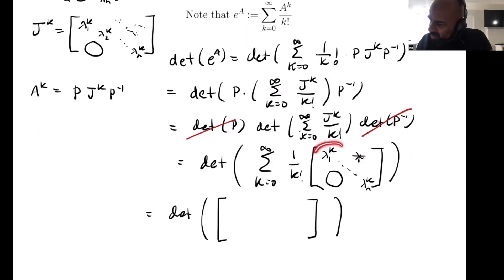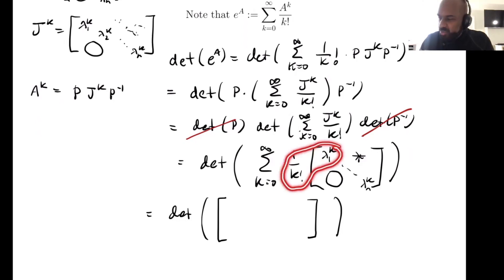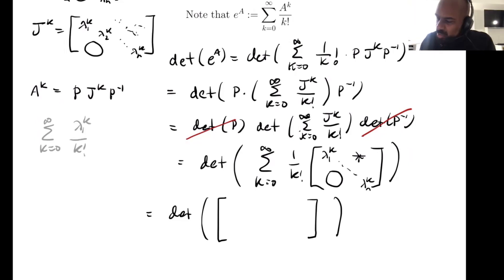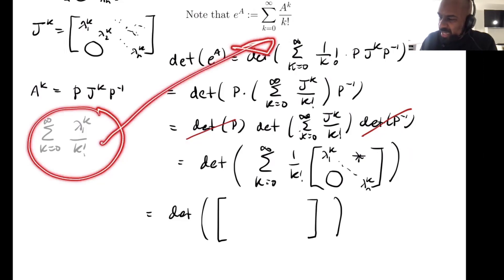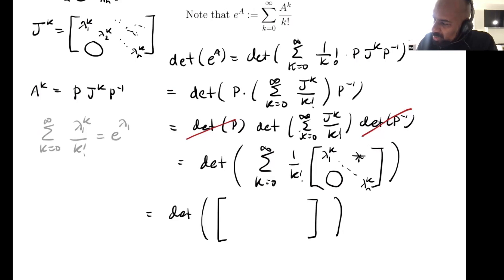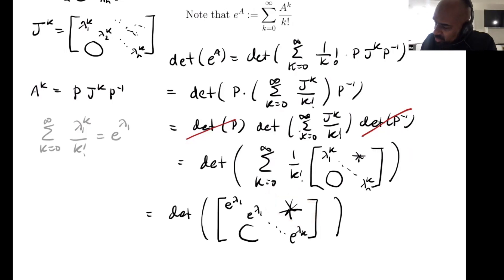Adding up all these constituent matrices, the first diagonal entry sums λ₁^K / K! from K=0 to infinity. This is exactly the power series expansion of e^X evaluated at X = λ₁, which converges for all values of X, so this equals e^(λ₁). By a similar argument, the diagonal entries become e^(λ₁), e^(λ₂), ..., e^(λₙ), with some stuff above the diagonal and zeros below.